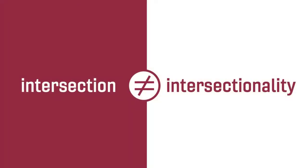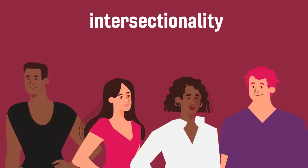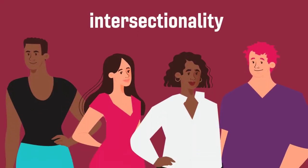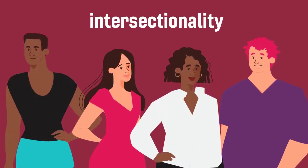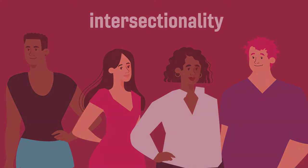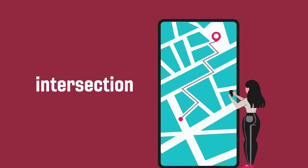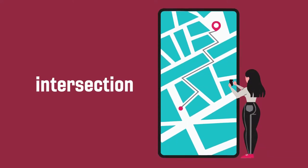Jargon can get confusing when an everyday word like 'intersection' also has a very specific meaning that defines a very specific problem. For example, if I'm using Crenshaw's theory of intersectionality to understand how intersections of race and gender affect beauty norms, my use of 'intersectionality' has a more complex definition than if I'm using the word to describe a location, like 'meet me at the intersection of Perry and Turner Street.'